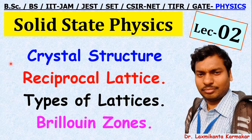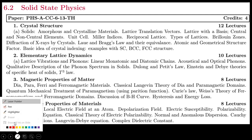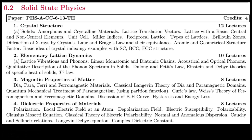Hello, welcome everyone. This is lecture number two on solid state physics. Today we want to discuss crystal structure, reciprocal lattice, types of lattice, and Brillouin zone. This is the syllabus for the sixth semester, University of Calcutta physics. The previous portion on solid, amorphous and crystalline material, lattice translational vectors, and unit cells was discussed in lecture one. This lecture covers the reciprocal lattice, types of lattice, and Brillouin zone.